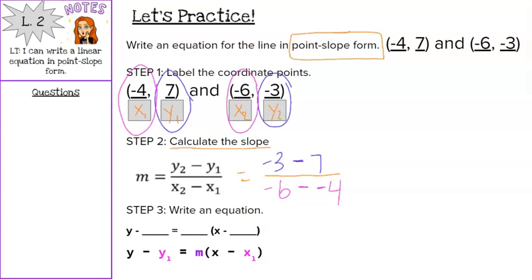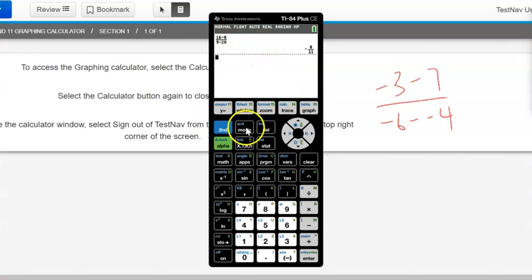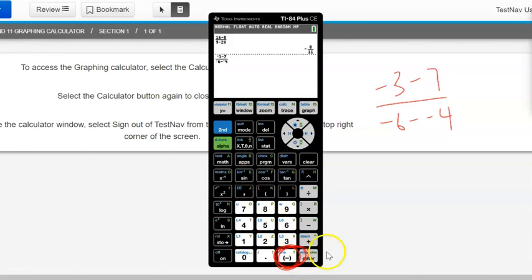So now we're going to use our calculator to calculate our slope. So again, we want to get that fraction on our calculator. We hit the green button, alpha, y equals, enter. And then we type in our fraction, negative 3, minus 7, over negative 6, minus negative 4. Make sure you're using this button right down here that I'm circling for your negatives. Once you've typed it in, just press enter, and our slope is 5.